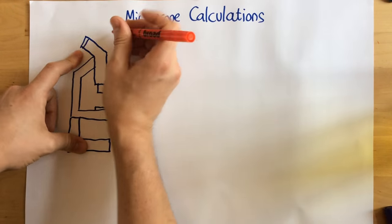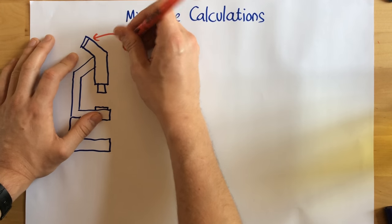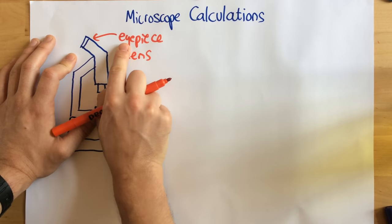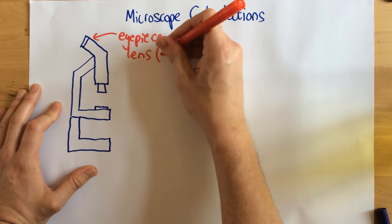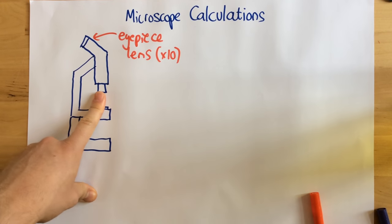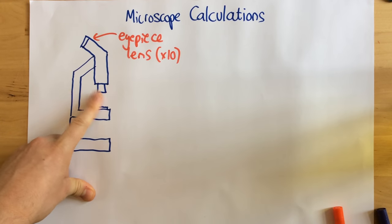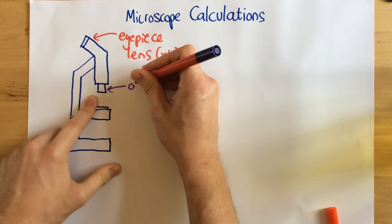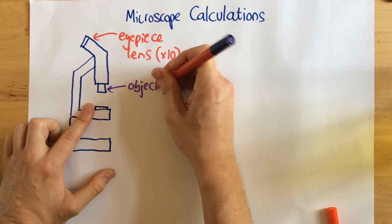So first of all, here is the eyepiece lens, the bit that you look down. We know that this is this one because it goes next to your eye. So let's say this one has a magnification of 10, which means it makes everything appear 10 times bigger. Now, the objective lens is this lower one here. It's the one that we use to look at the object. So that's why it's called objective lens.